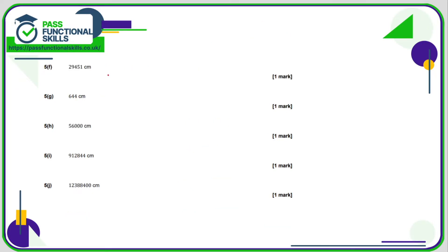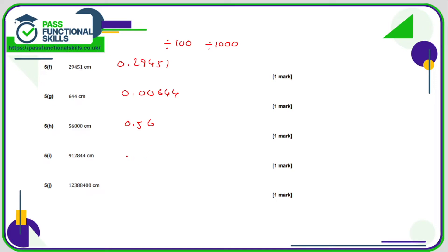It's the same for these questions — a continuation of the same method. Divide by 100 to turn them into metres, and then divide by 1000 to turn them into kilometres. You should get 0.29451, 0.00644, 0.56, 9.12844, and 123.884.